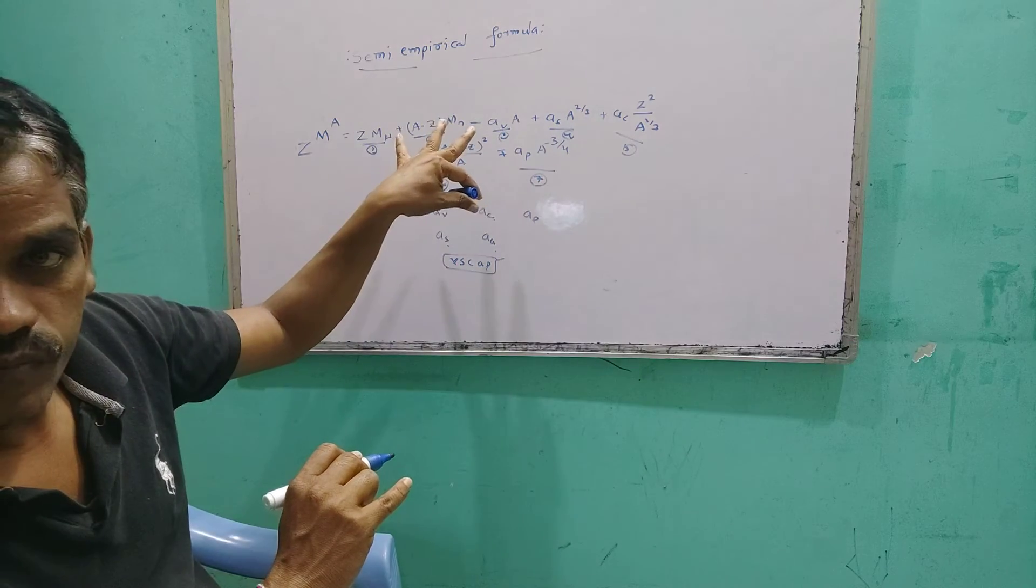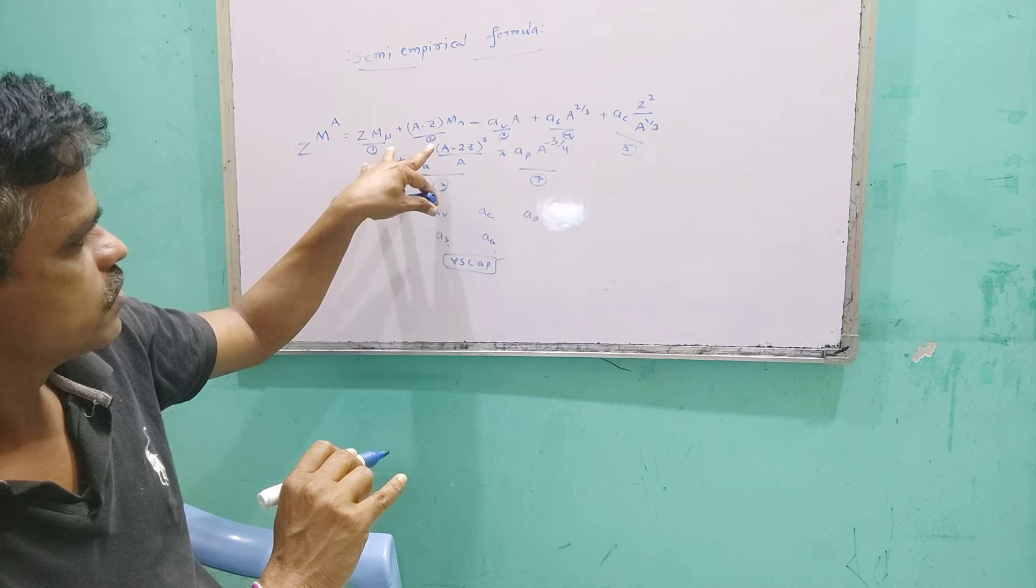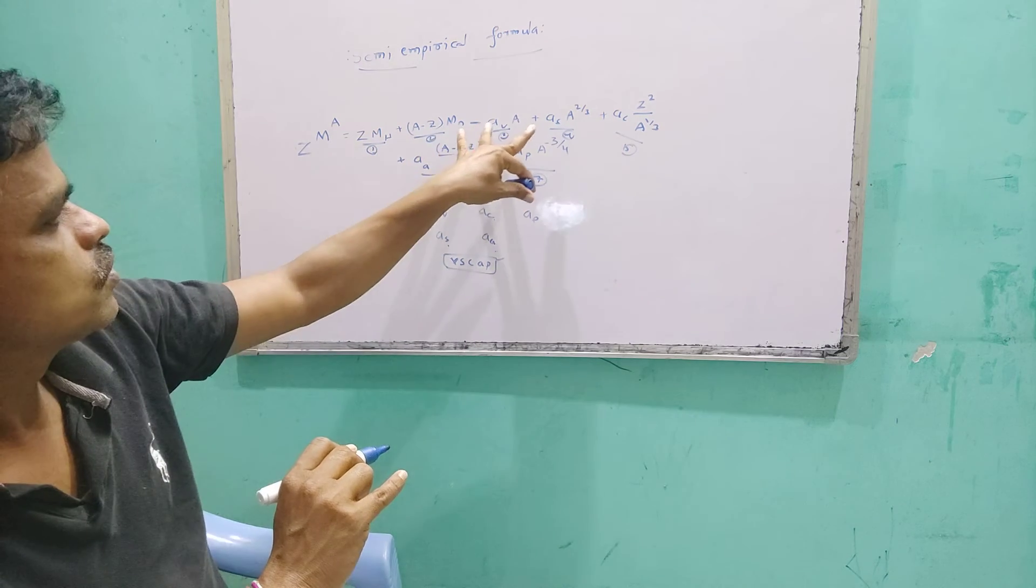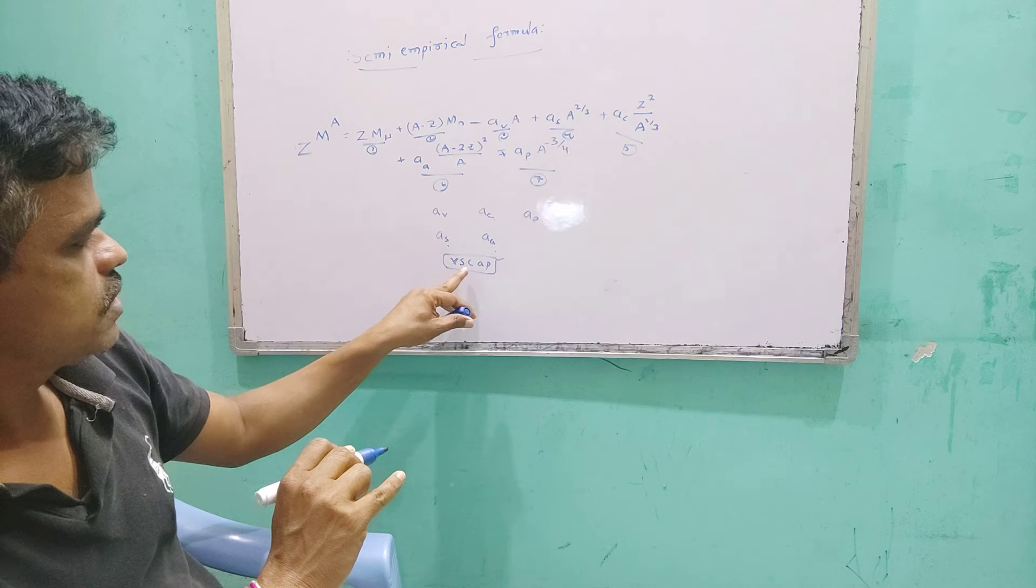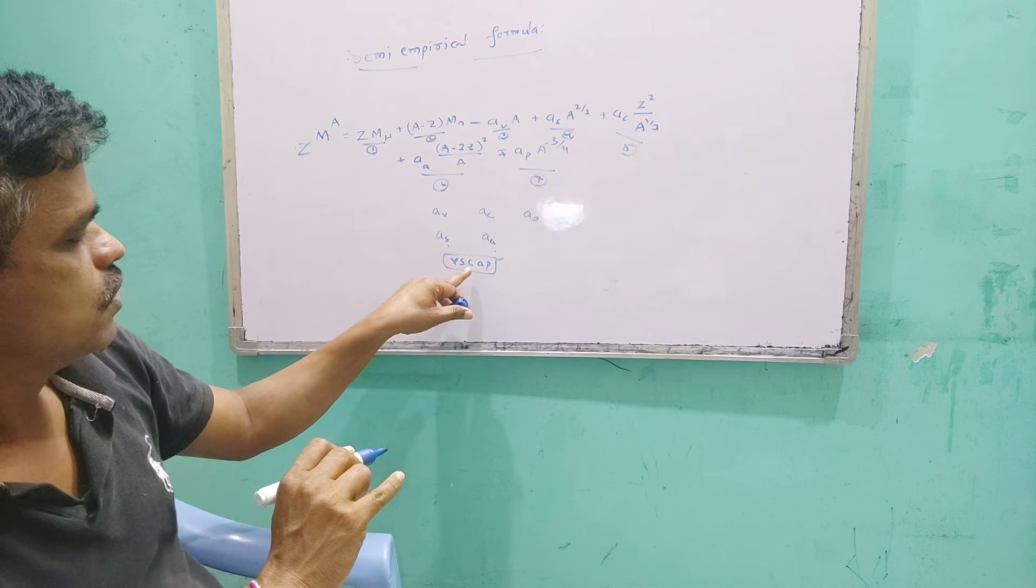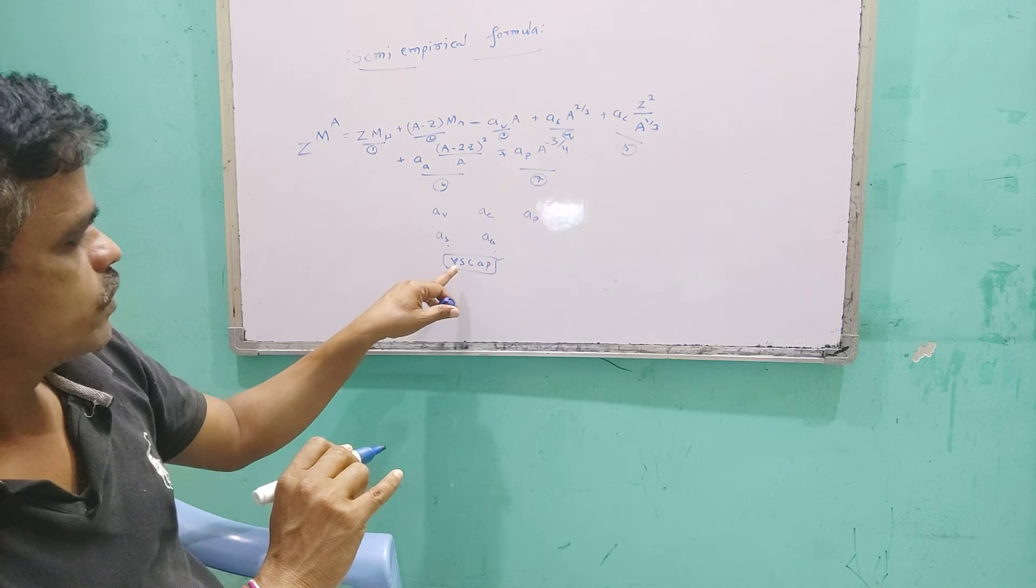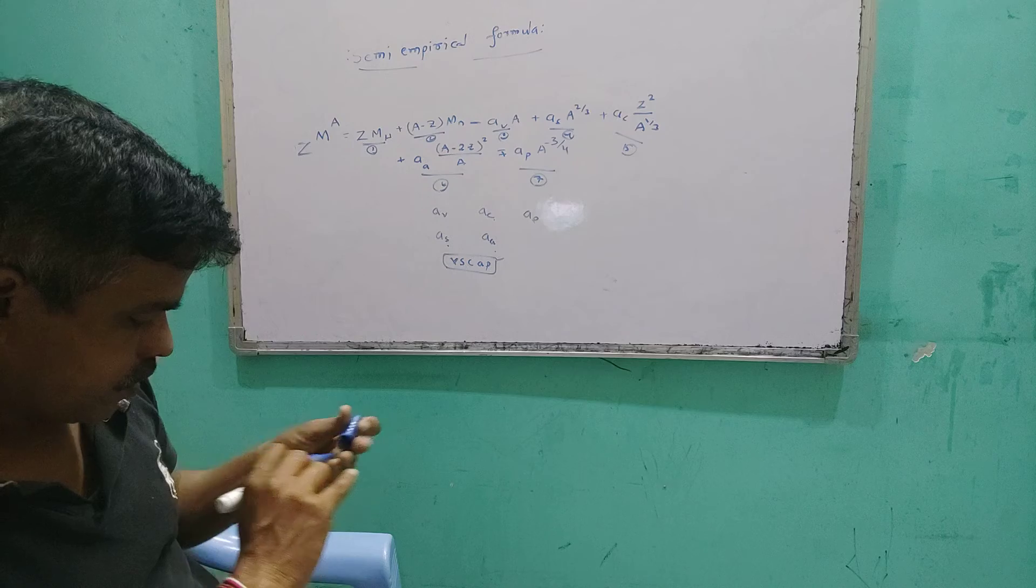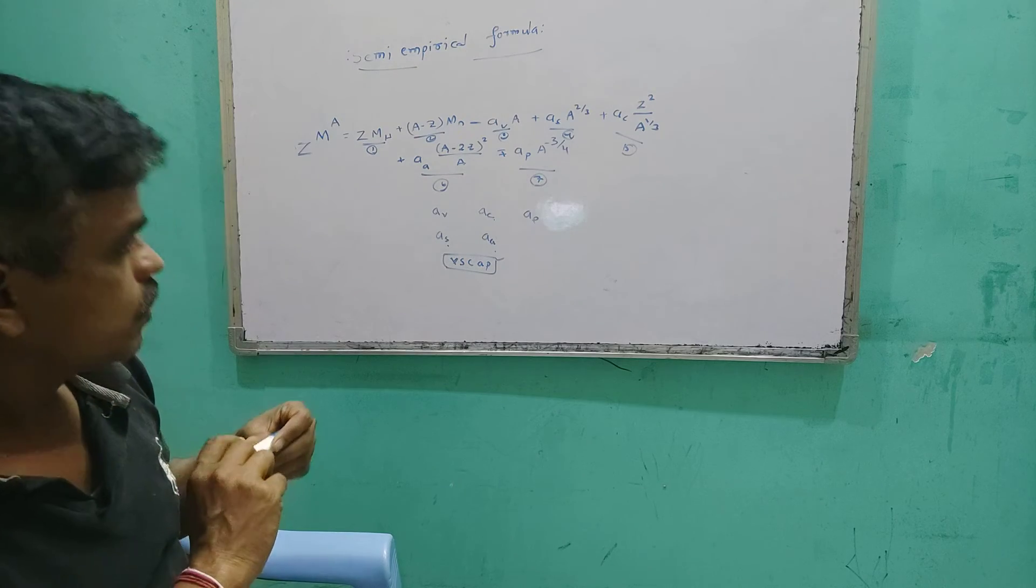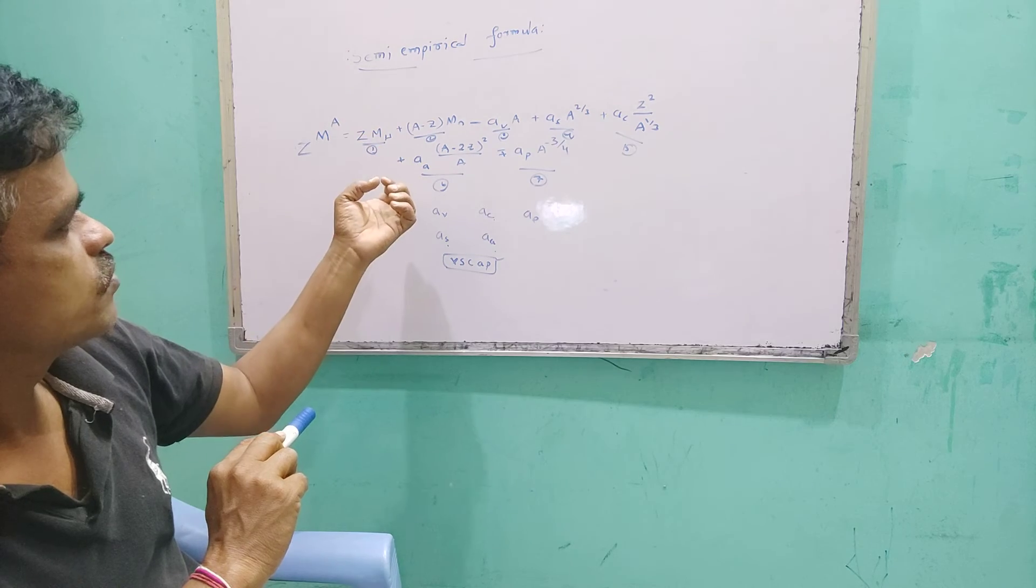So in the semi-empirical formula, a total of 7 terms are there. The initial two terms we can remember. We have to remember V-S-C-A-P: V for volume, S for symmetry, C for coulomb, A for asymmetry, P for parity. So these are all the seven terms in the semi-empirical formula.